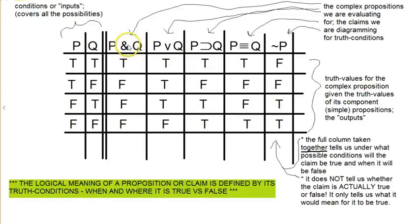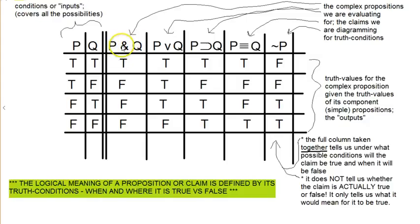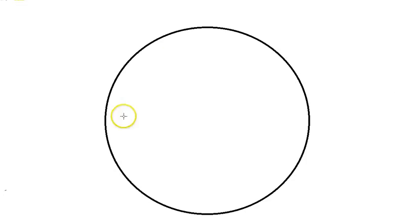I want to figure out when a statement is true and when it's false based on the truth of its component parts. The more complex statement is just talking about things that have to do with this claim and that claim — like whether Miss Scarlet is the murderer or Colonel Mustard is the murderer. Whether Obama is the President of the United States is not relevant to the claim about Miss Scarlet and Colonel Mustard. I just need to worry about those aspects of possible worlds that have to do with the particular statements in question.